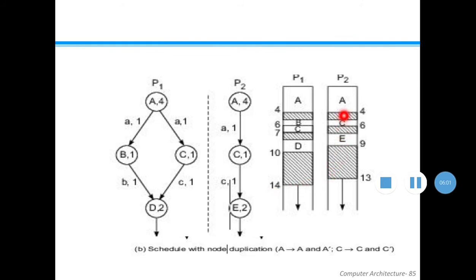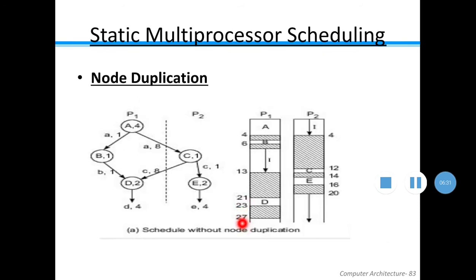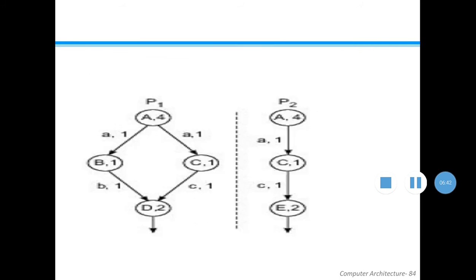After node duplication, the total execution completes at 14 clock cycles on P1. Similarly on P2, it executes A first, then one delay, then C for one clock cycle, then one more delay, then E for two clock cycles. So the total program execution with node duplication takes 14 clock cycles, compared to 27 clock cycles without node duplication — almost reduced to half.